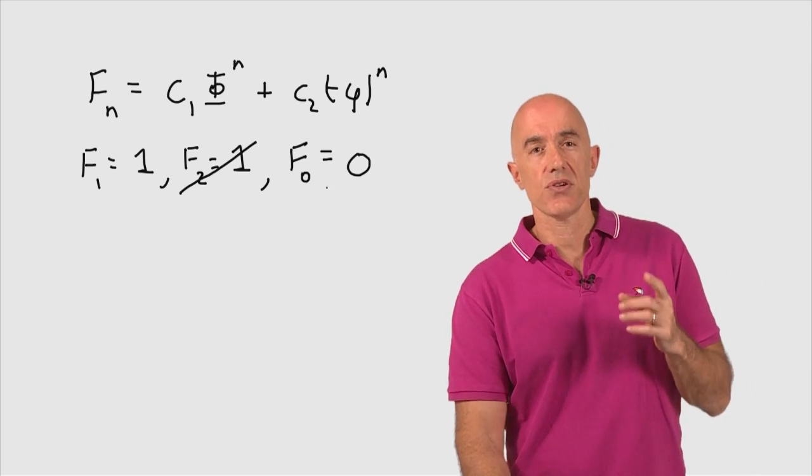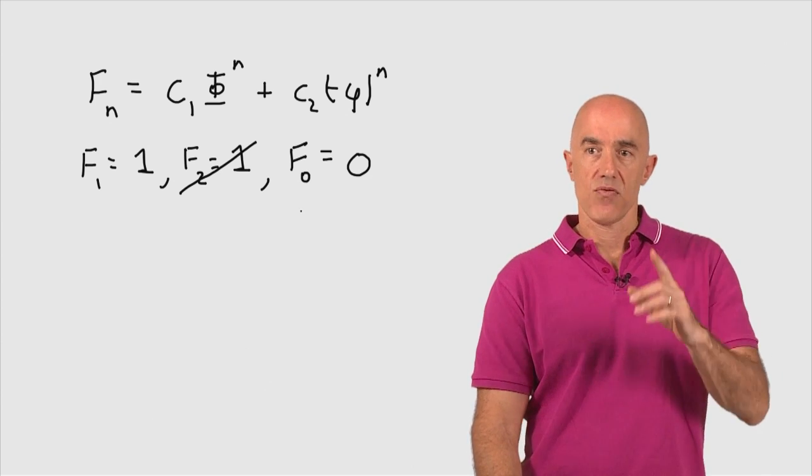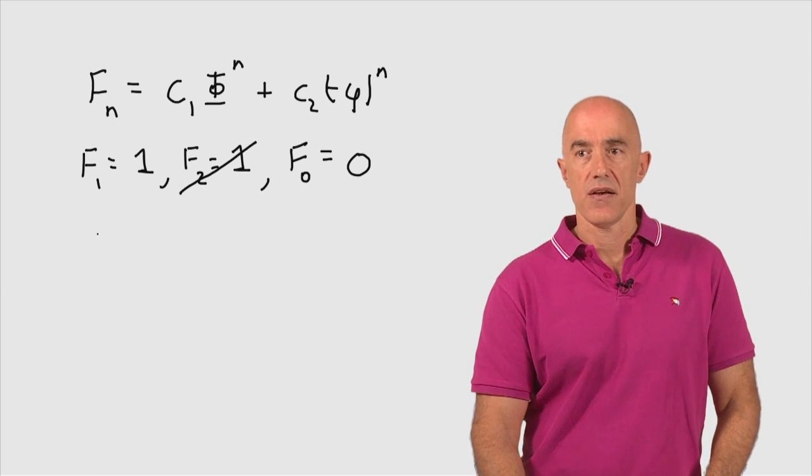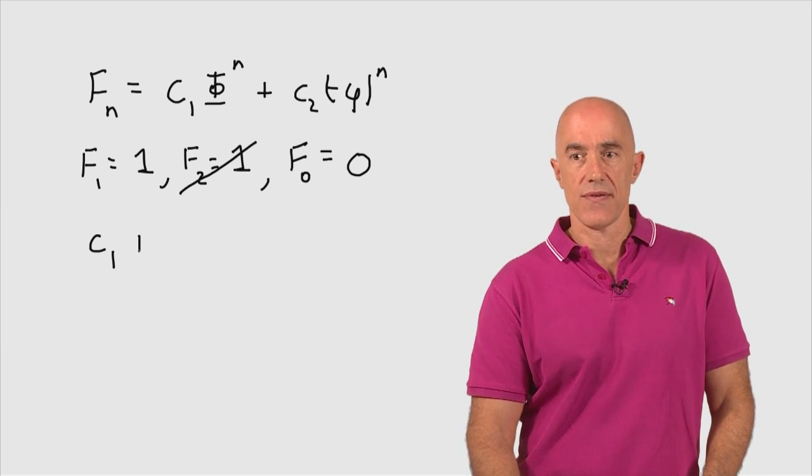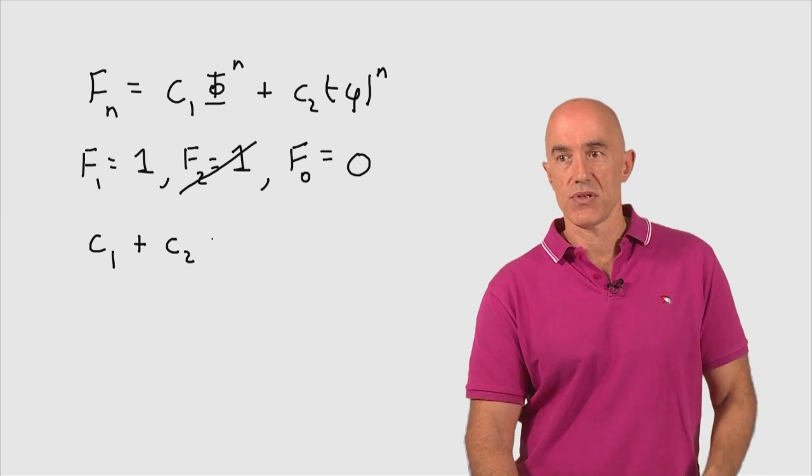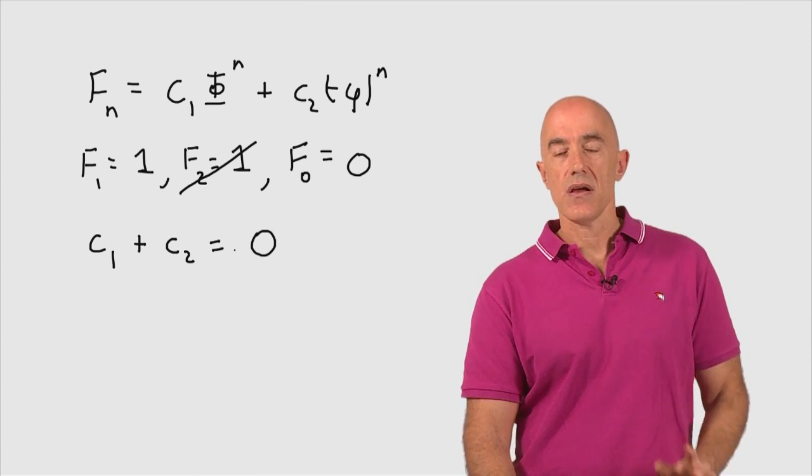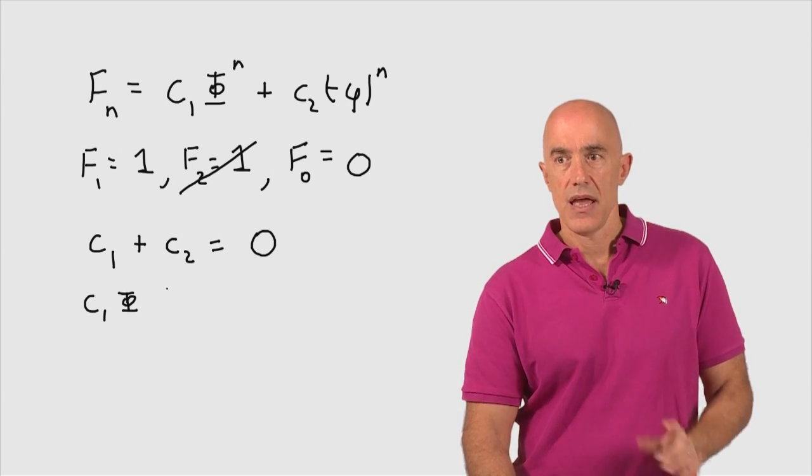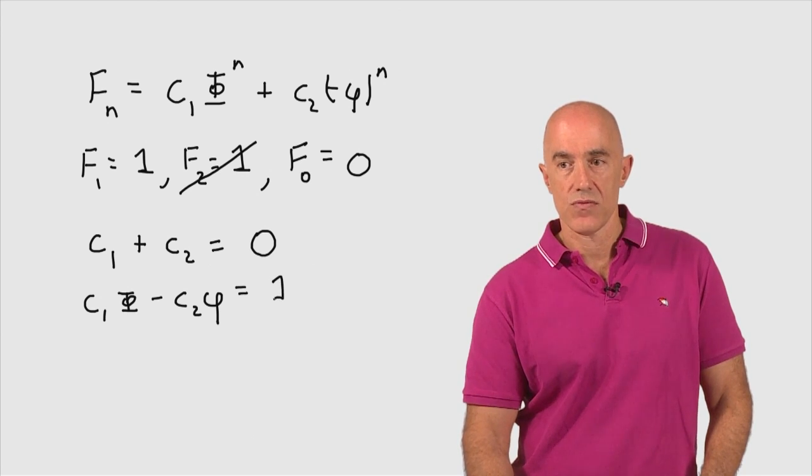So let's use the two initial conditions, F sub 0 equals 0, and F sub 1 equals 1. We plug that into this equation. For n equals 0, we have C1 times 1, the golden ratio to the 0 power, plus C2. And that's supposed to be equal to 0. For n equals 1, we have C1 times the golden ratio minus C2 times little phi. And that's supposed to be equal to F1, which is 1.